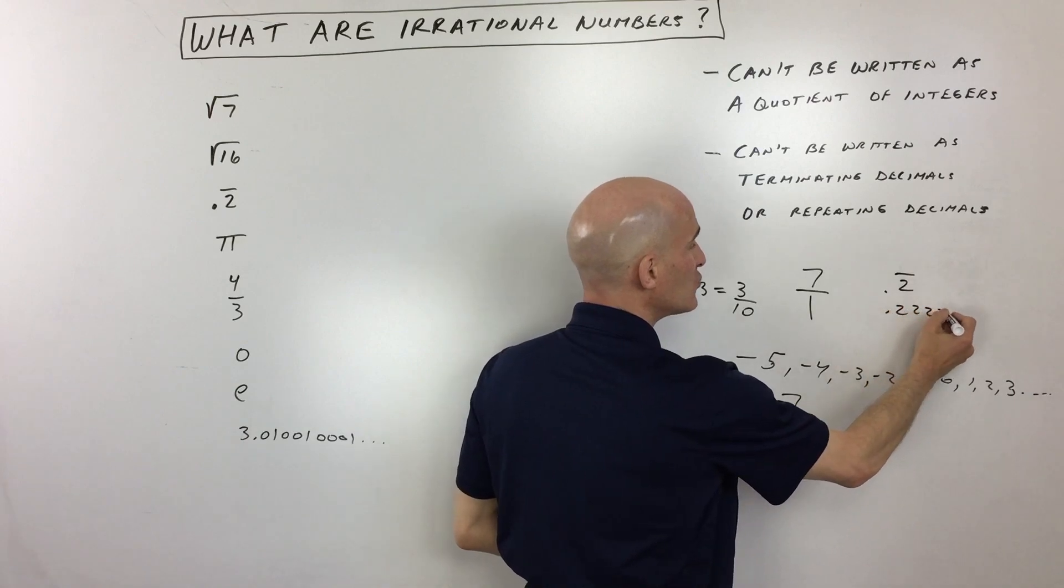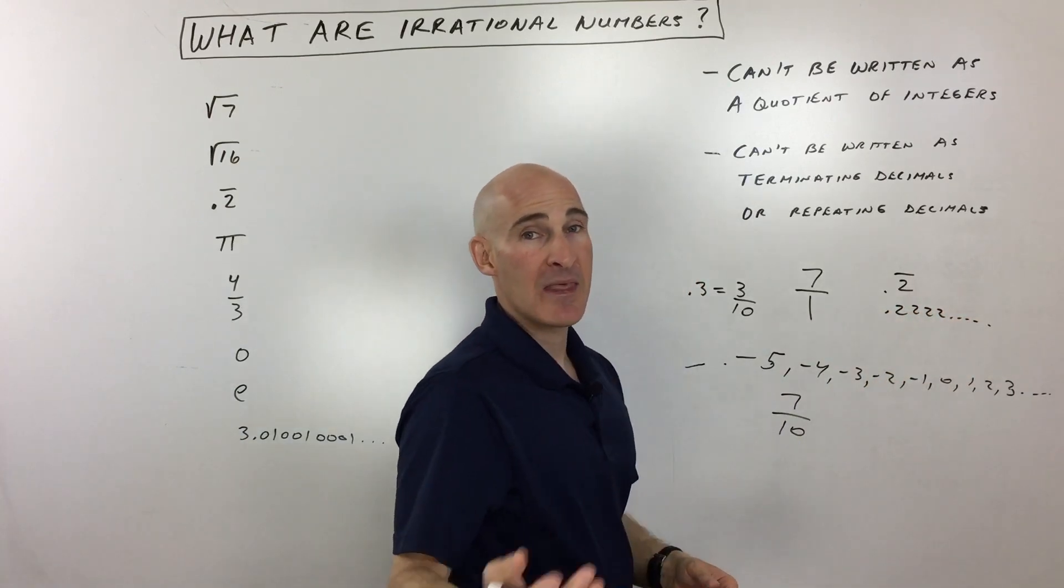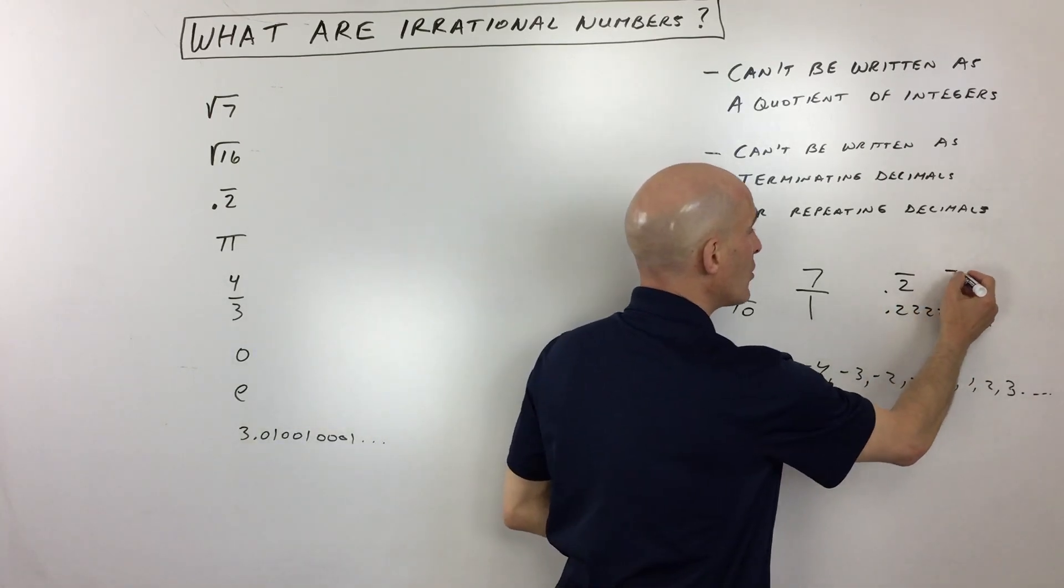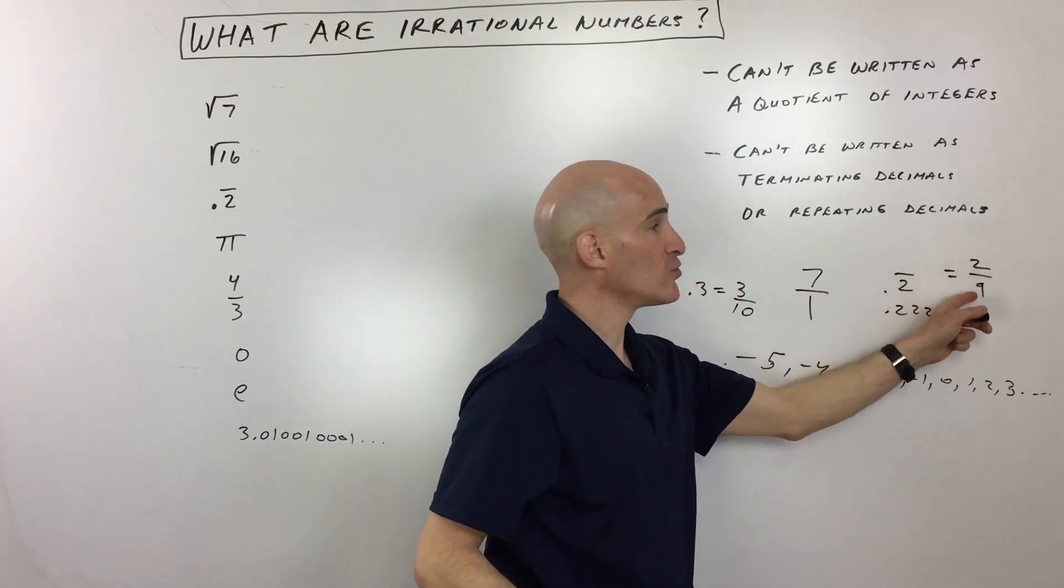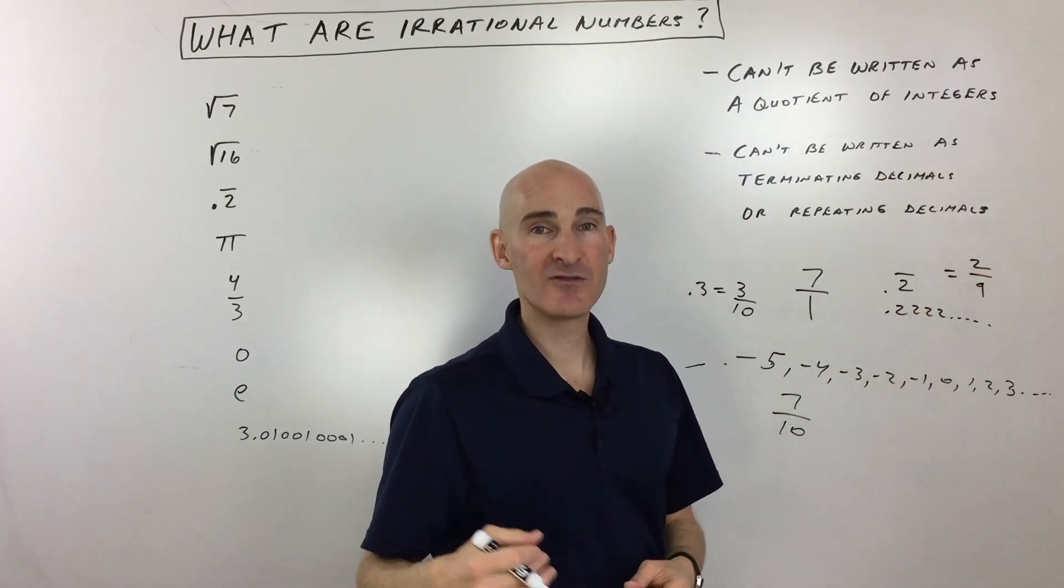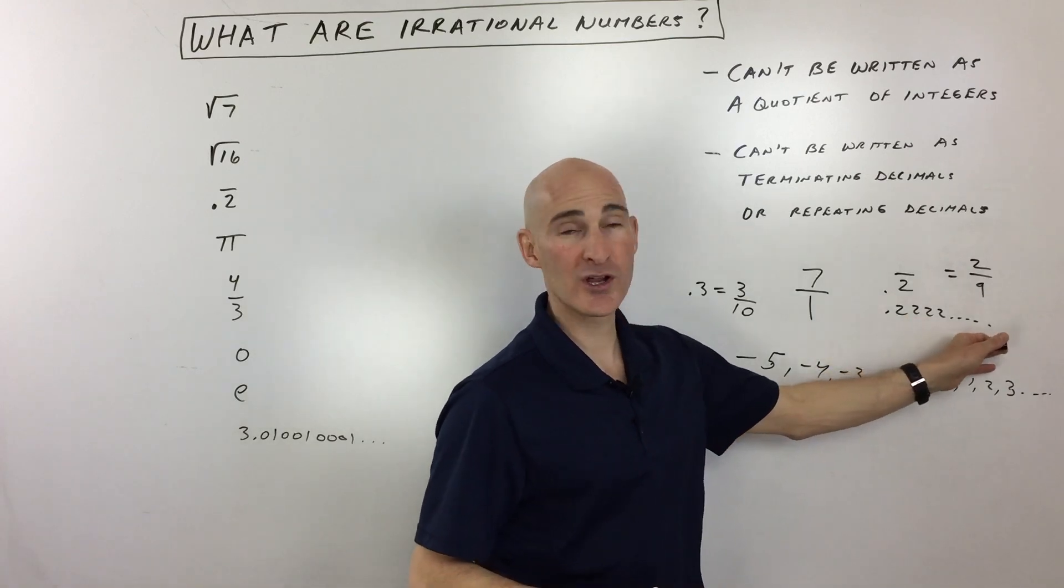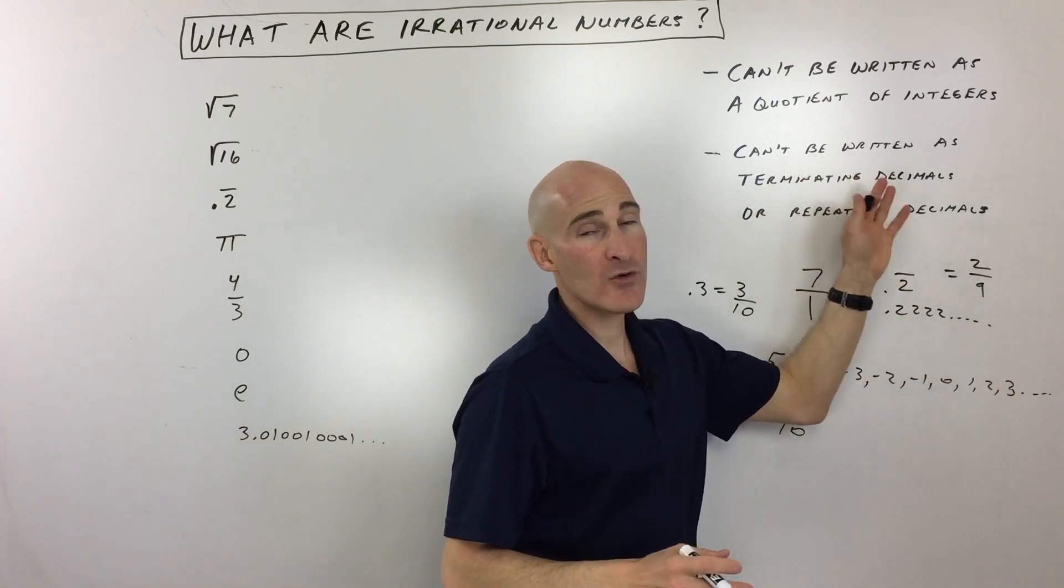So this is actually 0.222, dot dot dot, right? And that can actually be written as a ratio of an integer divided by an integer. It's 2 divided by 9. You can check that by dividing that on your calculator, and you'll see that you get 0.2 repeating.